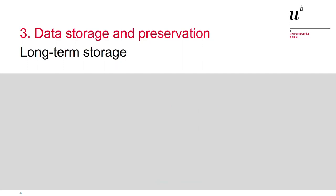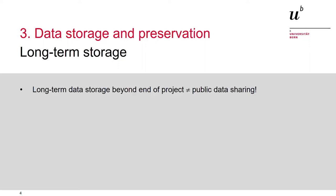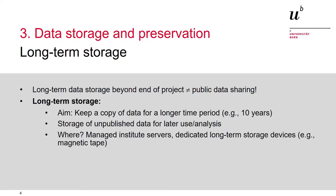The person or persons in charge of long-term data management must be identified in the DMP for later reference. Let me briefly clarify some terms that are important for planning data storage and backup. Section 3.2 of the DMP is about long-term data storage, which is often confused with public data sharing. However, storing and sharing have different objectives and different infrastructures must be used. The aim of long-term storage is to keep a copy of a dataset for a longer time period, for example 10 years. It is intended as a safe backup copy of data that have been publicly shared, but also of unpublished data that you may want to analyze at a later point.